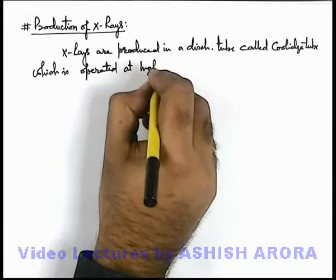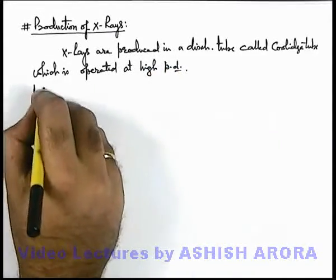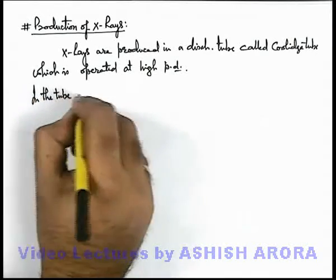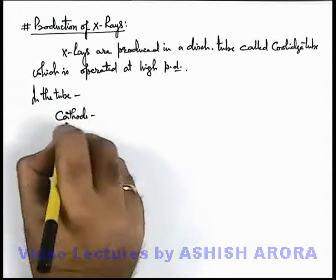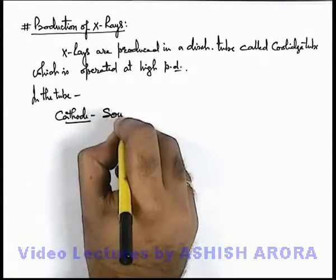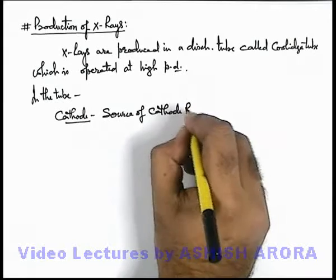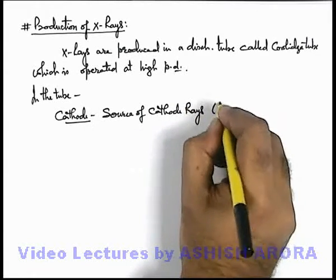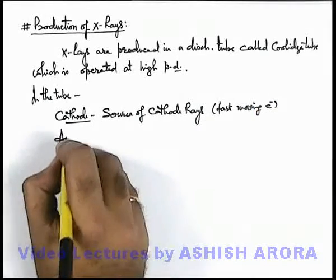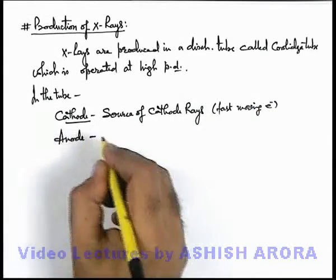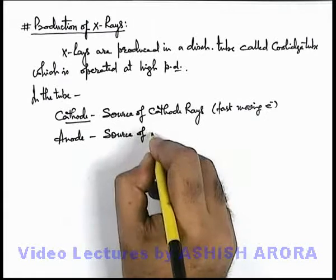As we know, every discharge tube consists of a cathode and anode. In the tube, the cathode is a source of cathode rays — as you've studied in your early classes, cathode rays are fast moving electrons. The anode is the part on which these fast moving electrons will strike, and this will act as a source of X-rays.